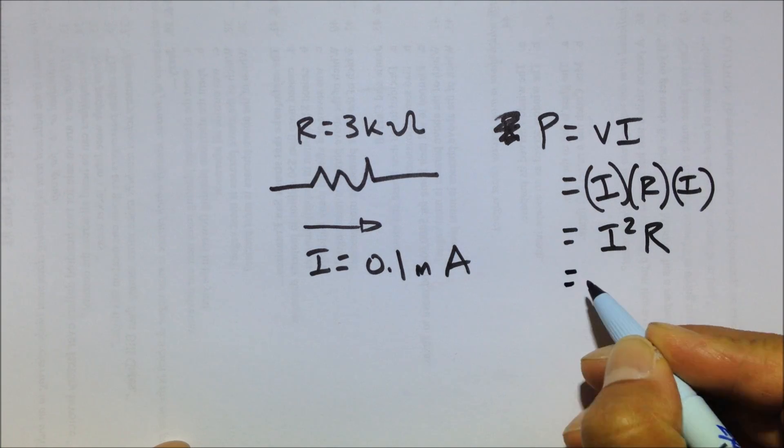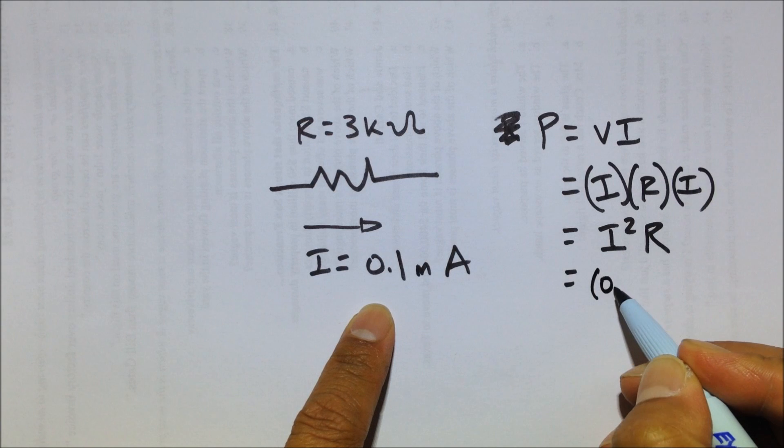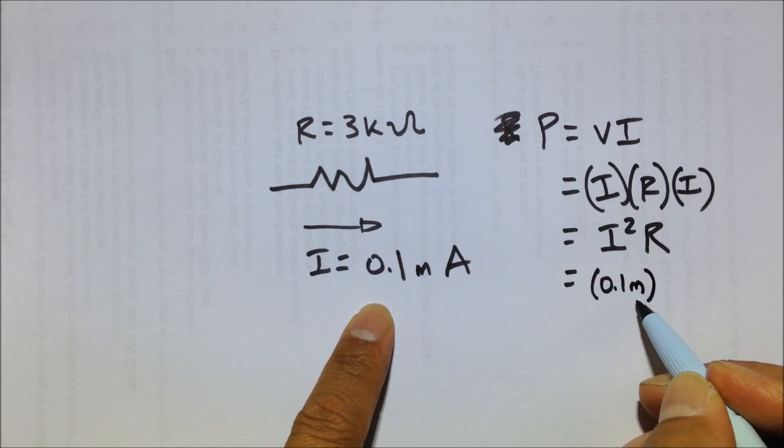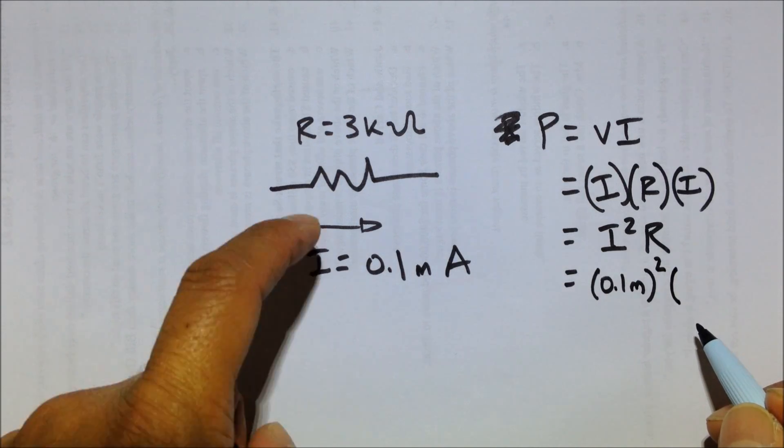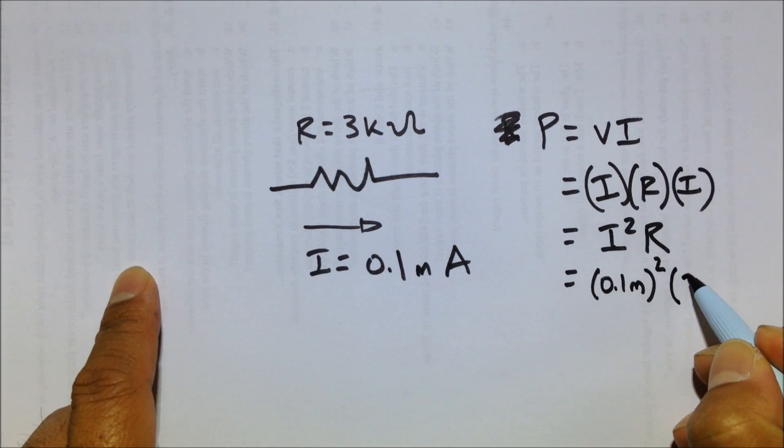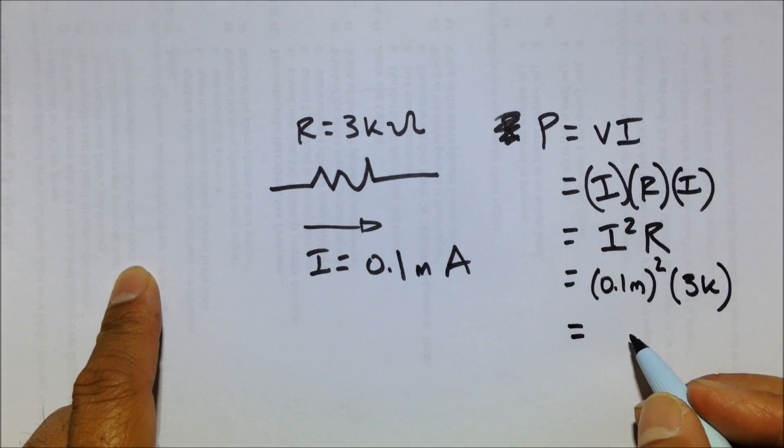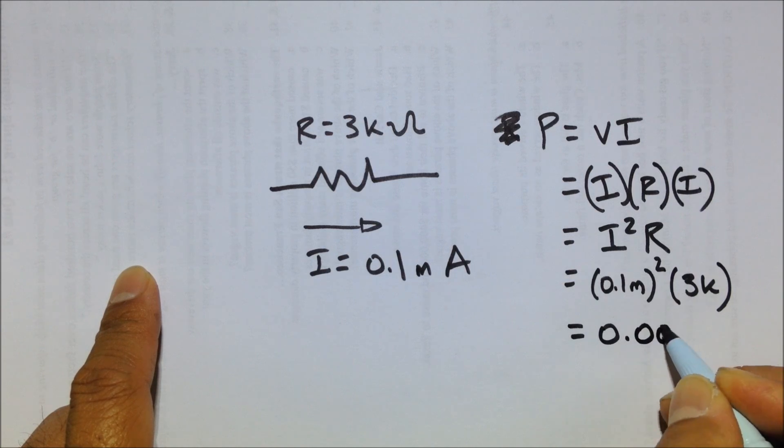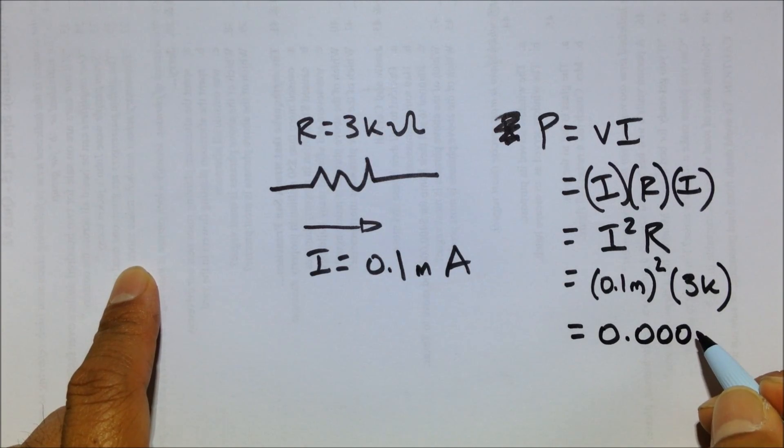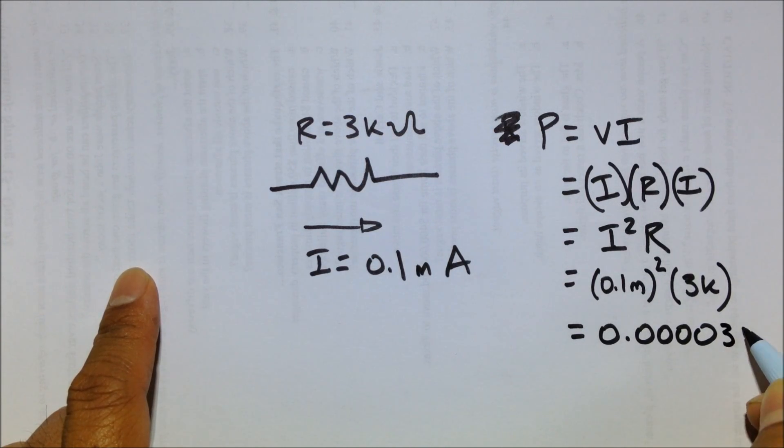And now we can place in these values in our equation. So the current is 0.1, again milliamps, squared times the resistance of that resistor, which is 3 kohm. And then just do some math. Plug this into your calculator and you get 0.00003 watts.